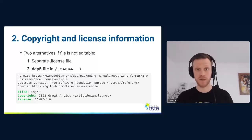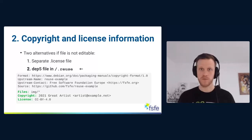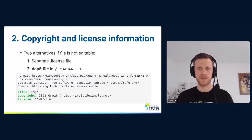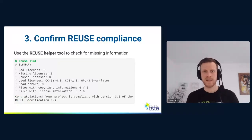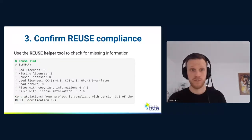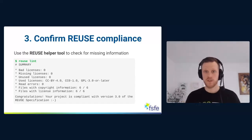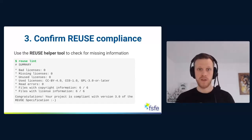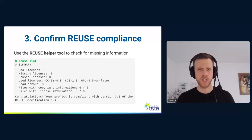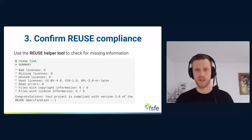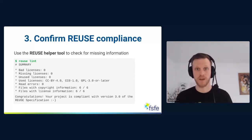With this, we can make sure we have all options to define copyright and license for every single file in a repository, including configuration files. The last step is really simple. You're invited to install the REUSE helper tool to check for missing information. It's a quite lightweight Python script — free software, you can check it out and also contribute. The simplest command is to run `reuse lint`, which crawls through the whole repository, tries to find copyright and licensing information, and in this example tells us everything is fine and the project is compliant with the specification.